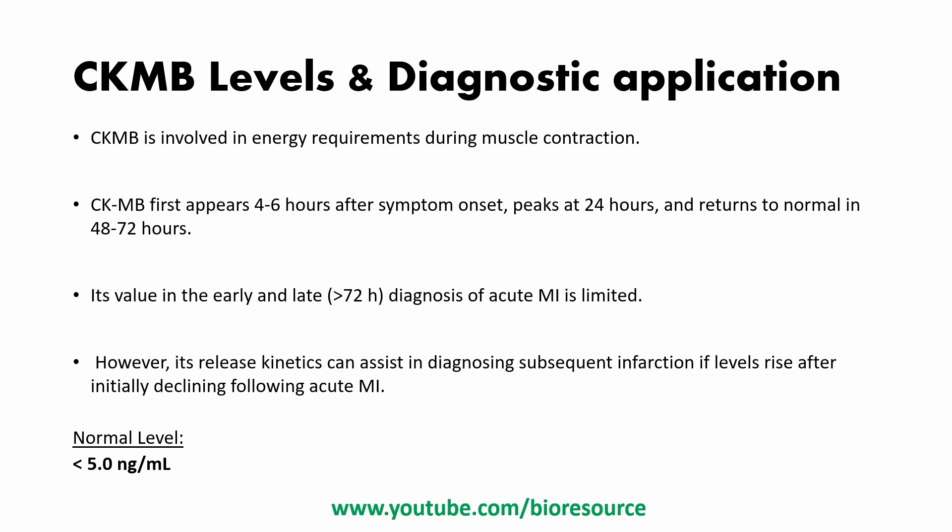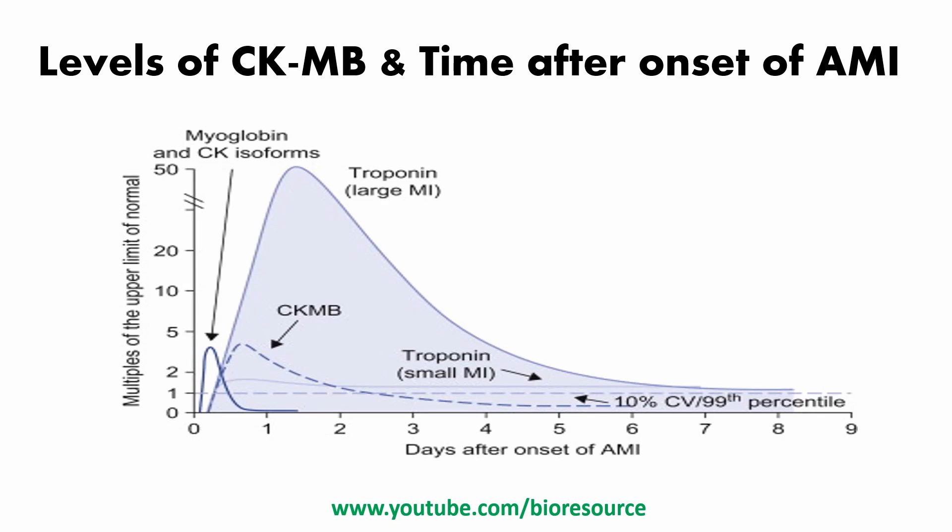The normal range for CKMB is less than 5 nanograms per mL; levels above this range indicate myocardial infarction. As shown in the graph, CKMB levels peak at around 24 hours and then start to decline. Since CKMB drops drastically within three days, a further onset of infarction will cause CKMB to rise again, making it useful for detecting recurring incidents — something troponin cannot do.